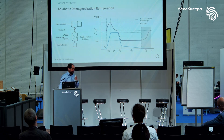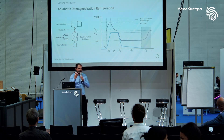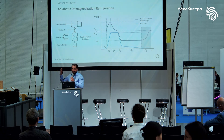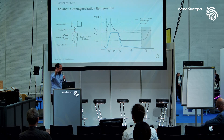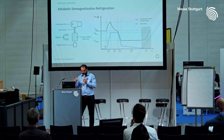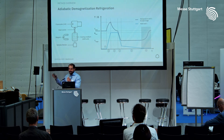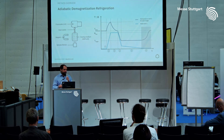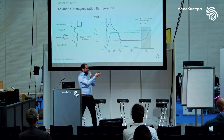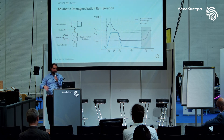Once the heating is dissipated, we open the heat switch, placing our ADR unit in an adiabatic condition — isolated from the thermal bath. As we remove the magnetic field, the spins in our paramagnet want to disorder, and the only place they can take this entropy is from the thermal entropy of the system. So as the magnetic field is ramped down, the temperature also comes down, giving us cooling power.